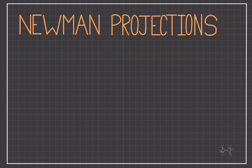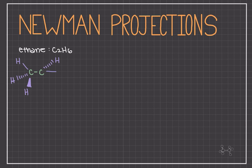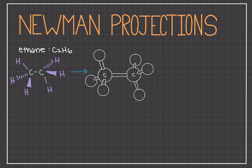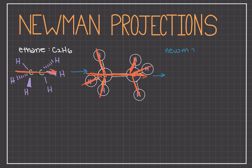We are now going to learn about Newman projections by examining ethane. Ethane has two carbons and six hydrogens. We can draw the geometric three-dimensional structure of ethane using the line and wedge model. For the first carbon we have one hydrogen going up, another going into the page, and another coming out of the page. For the second carbon we have one hydrogen going into the page, another coming out of the page, and another going down. We can have an even better 3D drawing with the ball and stick model where we can see the hydrogens coming off each carbon even better. Now imagine we look down the carbon-carbon bond as if it were a tube — the hydrogens look staggered from each other, not overlapping. This is where the Newman projection comes into play.